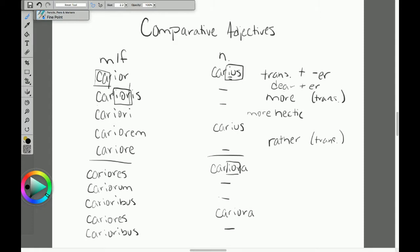Another important note is that if you see an ablative noun or substantive adjective after one of these comparatives, that is an ablative of comparison. It's telling you dearer than what, or more hectic than what. So if you were to see something like carior vita, that could be dearer than life.